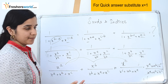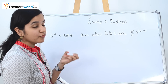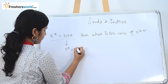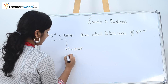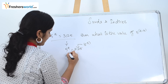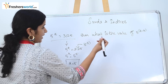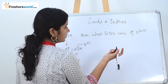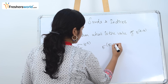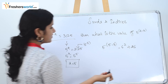Let's solve another sum. The next question is: 5 power a is equal to 3125. Then what is the value of 5 power a minus 3? We know that 5 power 5 is nothing but 3125. So 5 power a is equal to 5 power 5, and therefore a is equal to 5. Now we know the value of a. They want the value of 5 power a minus 3, which is 5 power (5 minus 3), which is 5 squared — nothing but 25.